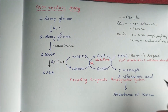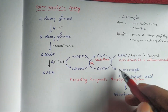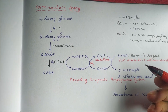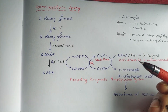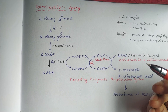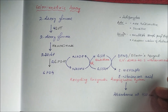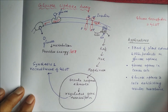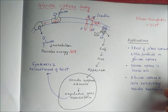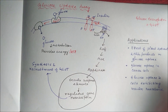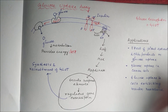In the colorimetric assay we use DTNB and other reagents; similar agents are used for the luminescence and fluorometric assays. This is all about the glucose uptake assay. Wherever glucose uptake or insulin-like activity is involved, we can evaluate or screen compounds through this assay. Thank you.